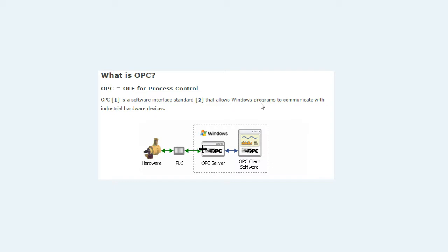How would you choose one versus another? First, what PLC are you trying to connect to? If it's Allen Bradley ControlLogix, RSLinx might be a good choice. The only downside of RSLinx is it's quite expensive — at least $2,000. If you've got a GE 9070 PLC, you may choose a KepServer or Matrikon product, which offer a wider range of supported PLCs and are a little less expensive.